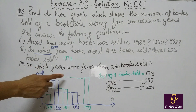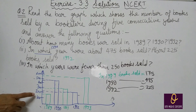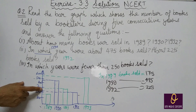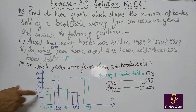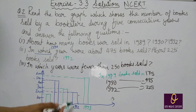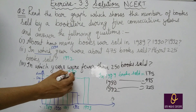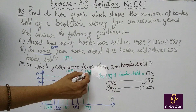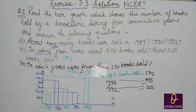In which year were fewer than 250 books sold? 250 से कम देखिए, यानि 200 के पास में जो है. यह जो blue वाला — यह 220 है, 250 से कम. तो note करेंगे: 1992 में, और उससे कम था — 1989 में 175 था. तो यह 2 years हैं जिनमें books sold less than 250 थीं.